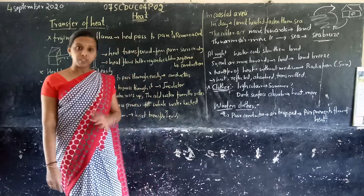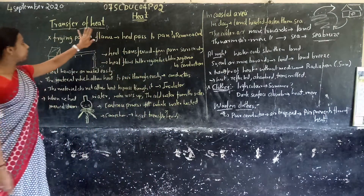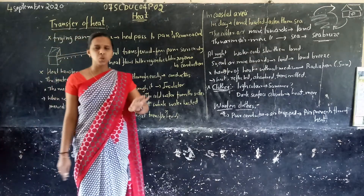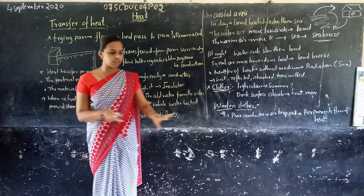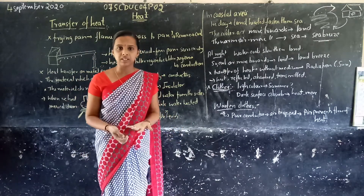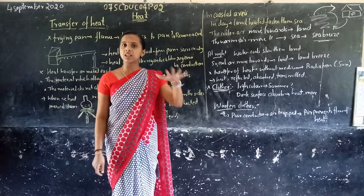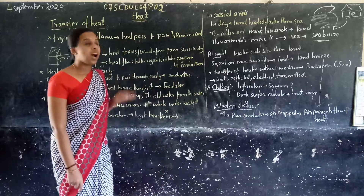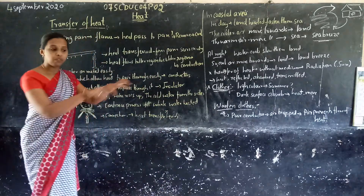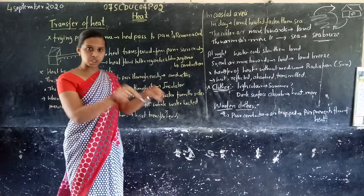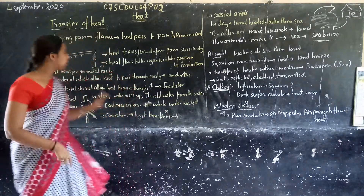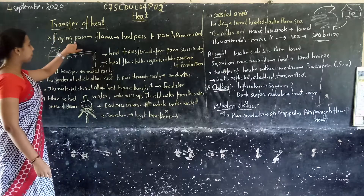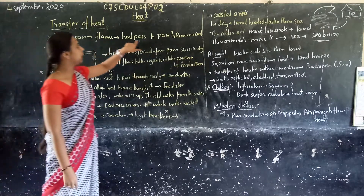In this class, we study the transfer of heat. Children, we study how heat is transferred from one place to another, from one position to another. Have you observed heat being transferred anywhere? Let us take the example of a frying pan.